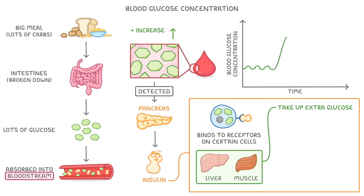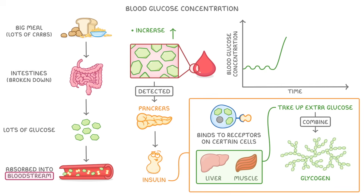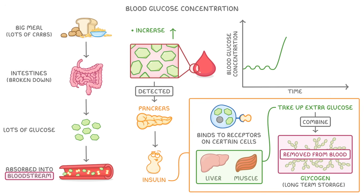This happens in loads of different cells, but most important are liver and muscle cells. These two take up lots of the extra glucose molecules, and combine them together to form glycogen, which is basically a long-term storage form of glucose. And so because all of this glucose is being removed from the blood, the blood glucose concentration is going to decrease, falling back to the normal level.